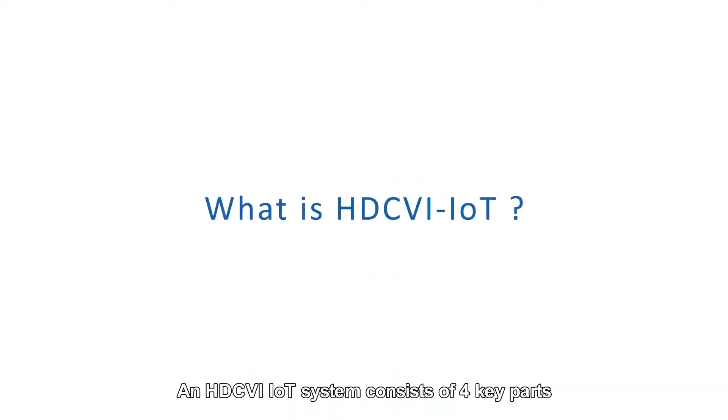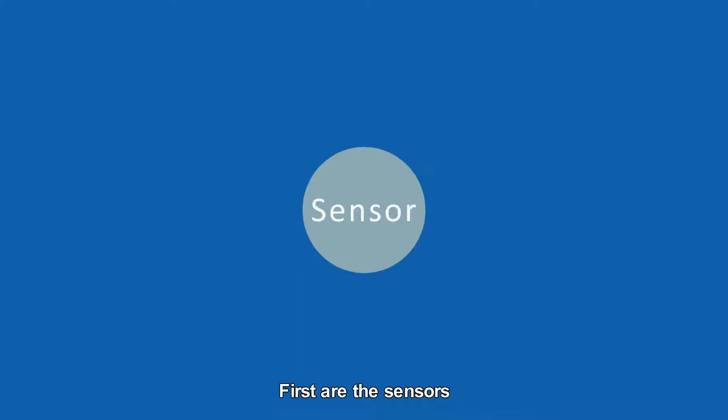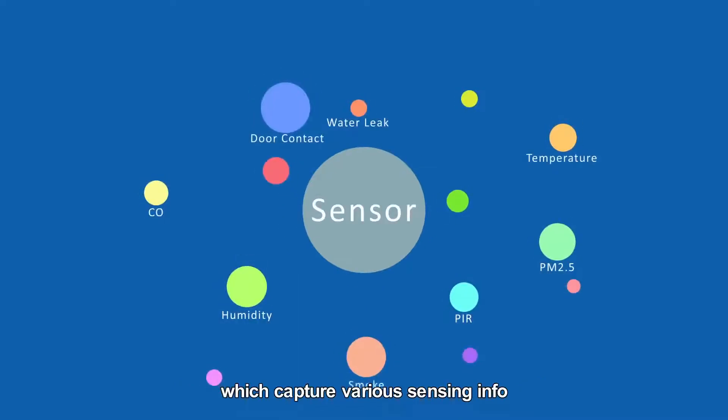Here's how it works. An HDCVI IOT system consists of four key parts. First are the sensors, which capture various sensing info.